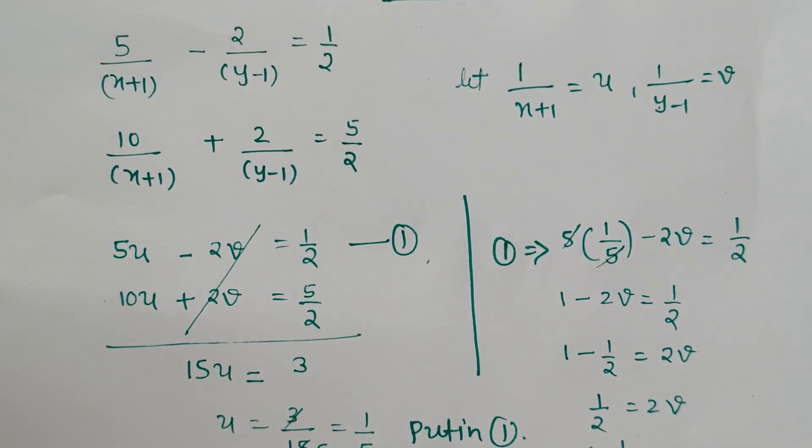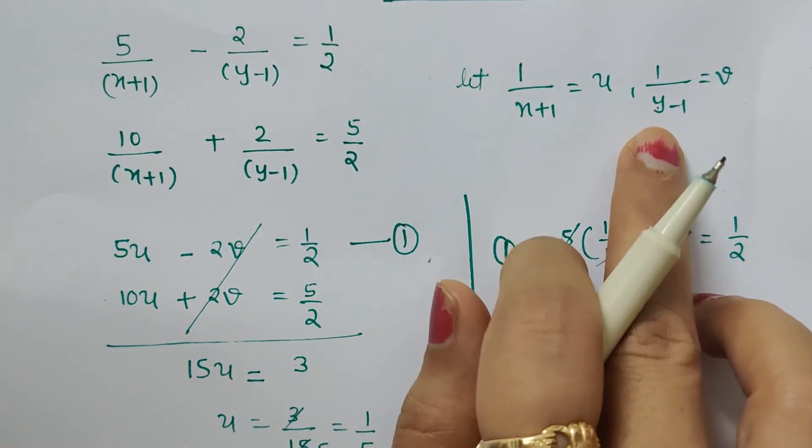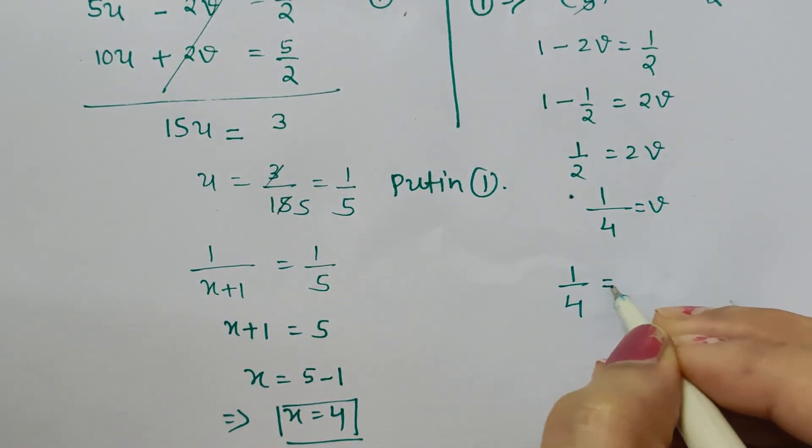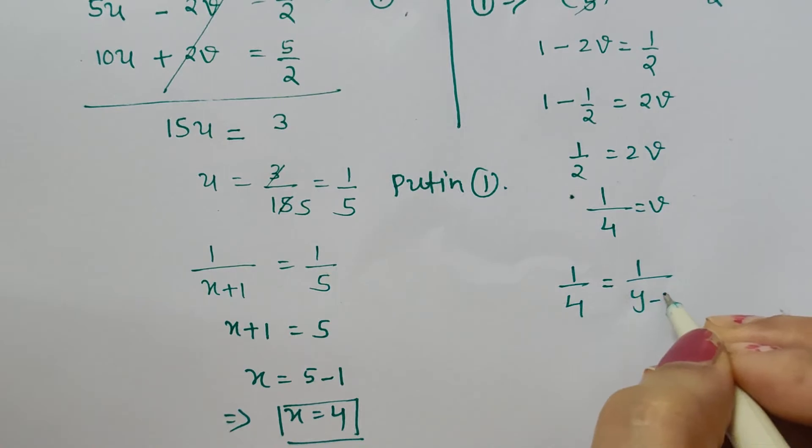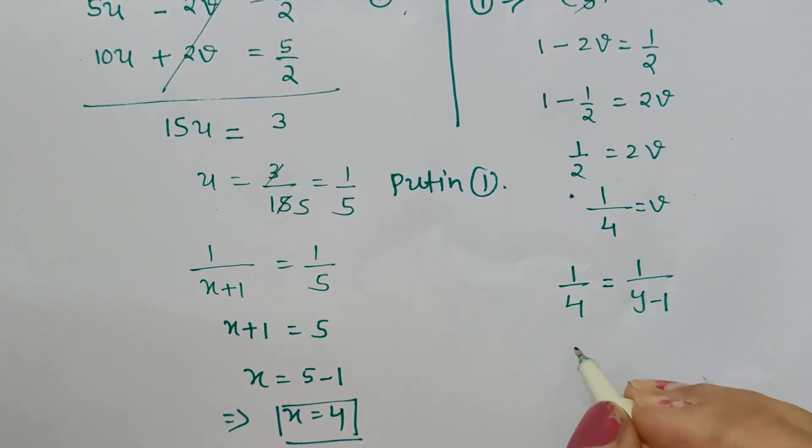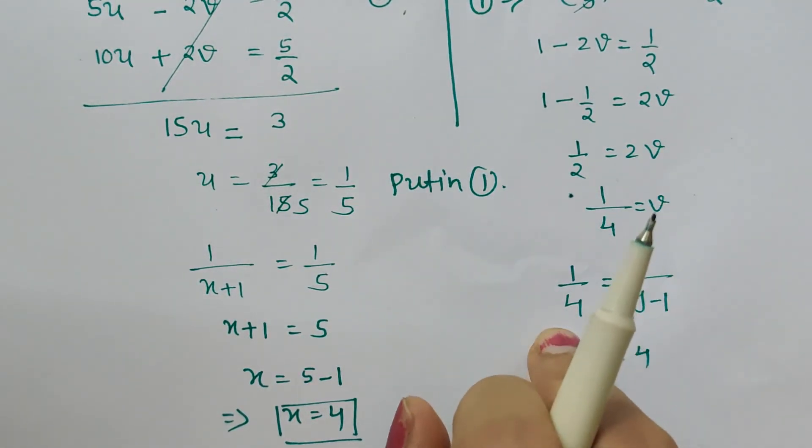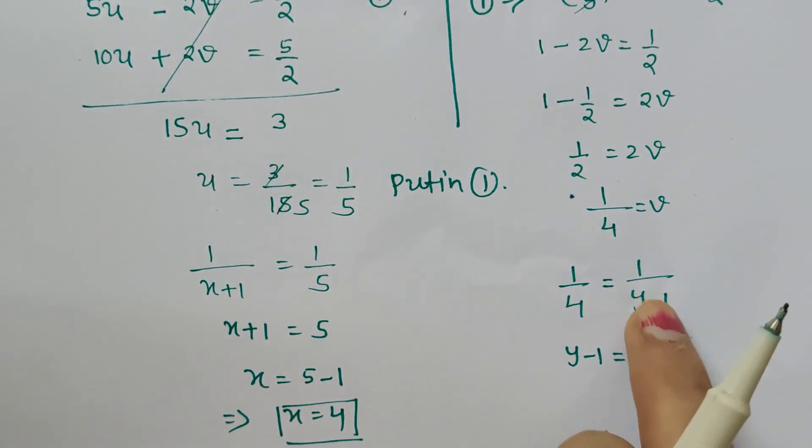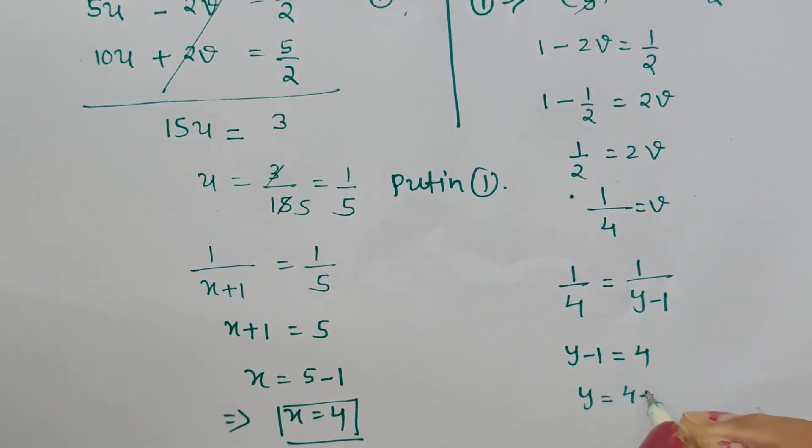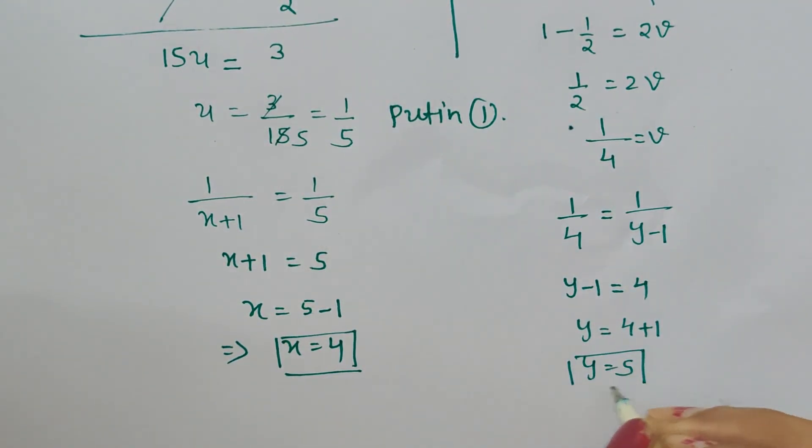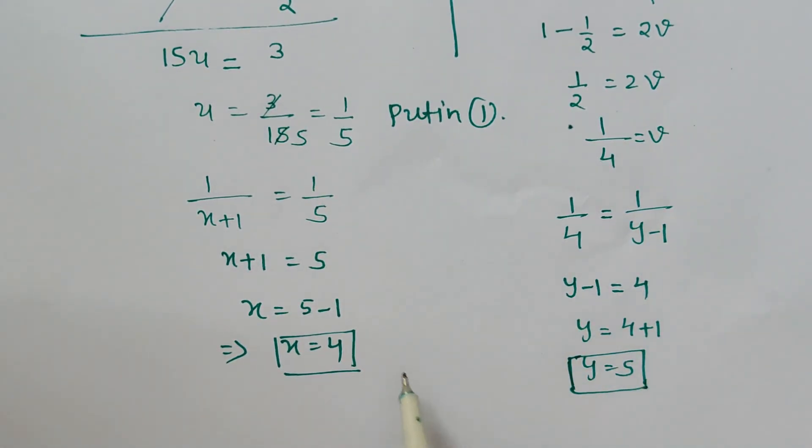Now what we have assumed v as: v is nothing but 1/(y-1). So let's substitute: 1/4 = 1/(y-1). Reciprocating both sides, we get y-1 = 4. Reciprocation means writing what is in the denominator in the numerator. So y = 4+1, hence y = 5. This is how we solve a system of linear equations in reducible form: x is 4 and y is 5.